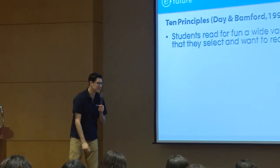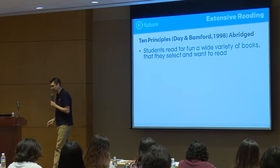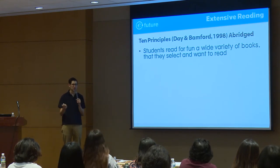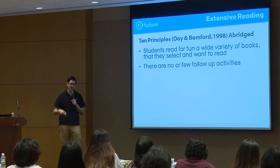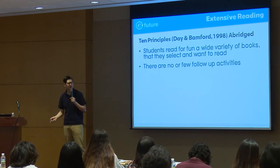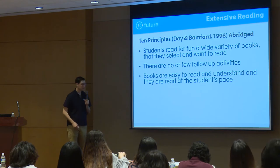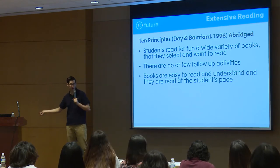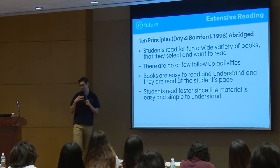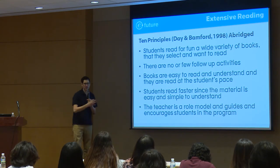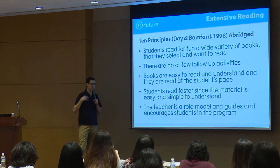There are lots of different ways to understand what extensive reading is and how you could do it. These ten principles — definitely abridged. Students read a wide variety of books; students sometimes select the material themselves, but not always. There are sometimes no or very few follow-up activities. Books are easy to read and understand, read at the student's pace — hopefully on the quicker side. Students read faster since the material is easy, and the teacher could be a role model who guides and encourages students.